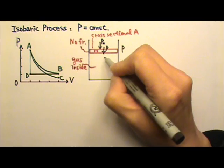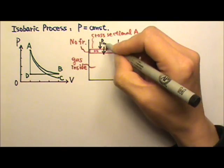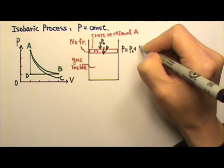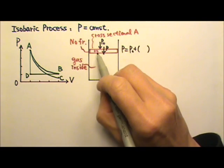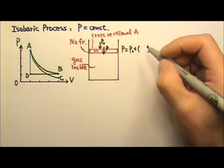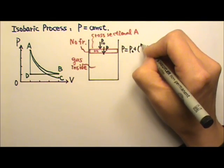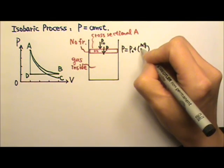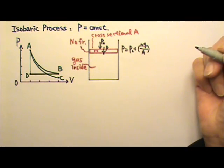Therefore, the pressure over here for the gas is the pressure from the top, the atmospheric pressure, plus the pressure produced by the weight of the piston. If the piston has a mass M and a cross-sectional area A, the pressure from the weight of the piston would be the weight Mg divided by the area, because force divided by the area gives us pressure.